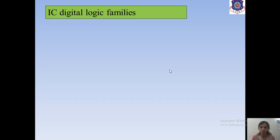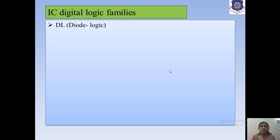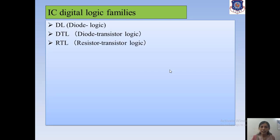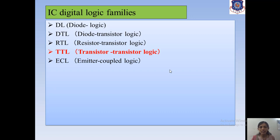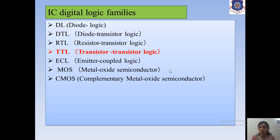The types of IC digital logic families are: DL (diode logic), DTL (diode transistor logic), RTL (resistor transistor logic), TTL (transistor transistor logic), ECL (emitter coupled logic), MOS (metal oxide semiconductor), and CMOS (complementary metal oxide semiconductor). In this lecture, we will study the TTL construction, circuit, and working.